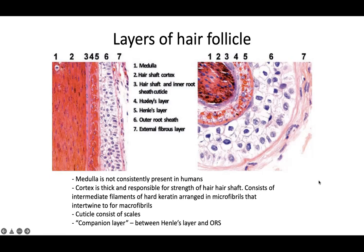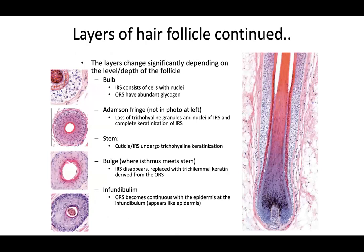Key factoids: the medulla is not consistently present in humans. The cortex is thick and responsible for the strength of the hair shaft. The cuticle consists of scales. There is a companion layer between Henle's layer and the outer root sheath, though it's super thin and rarely tested. The layers change significantly depending on the level and depth of the follicle — the ratio of outer root to inner root sheath thickness changes as you proceed down.